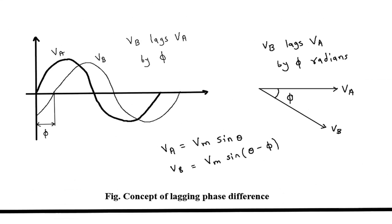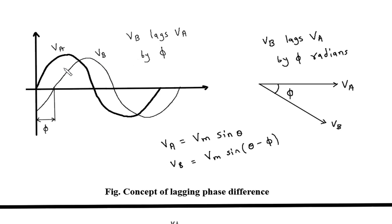Here we can see there are two waveforms. This difference in timing or phase is called phase difference and it is denoted by Phi. Also, we can see that these two waveforms are periodic waveforms with the same frequency.